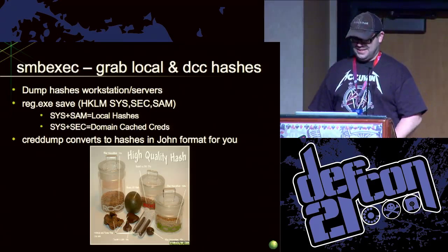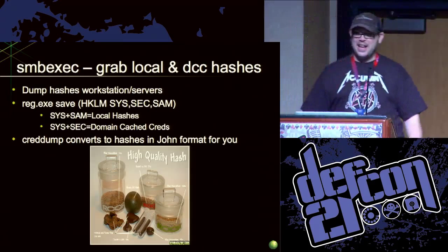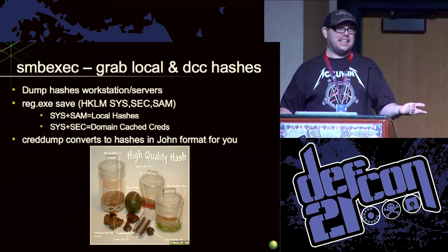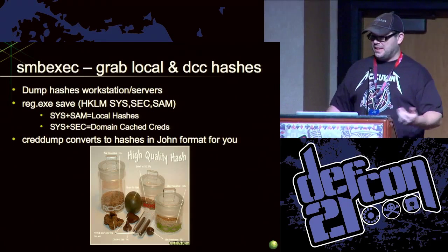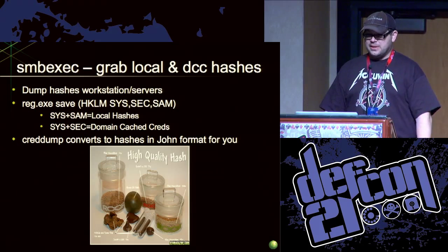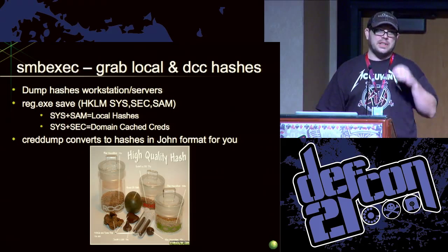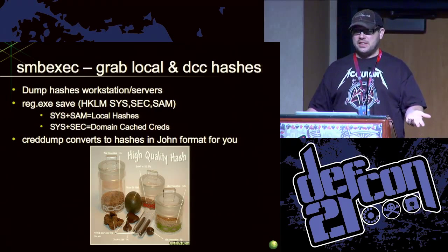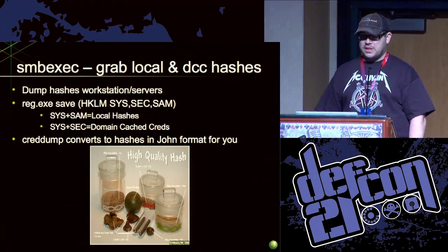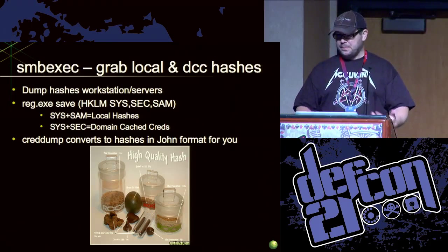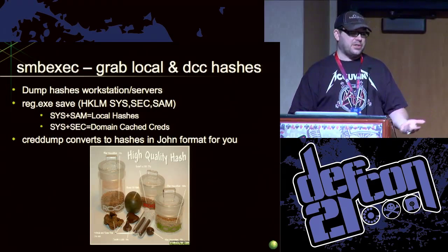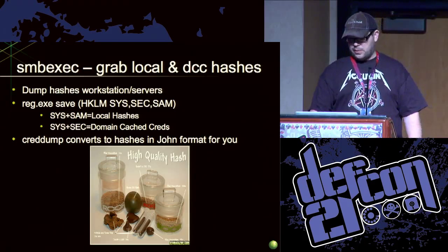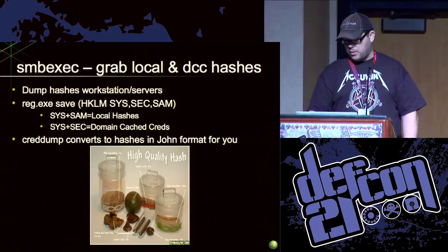We're like, holy fuck, let's get some hashes. The old school way was to get the registry keys out and do it — so let's automate that. We wrote SMB exec to dump the hashes from workstations and servers. What it basically does is run the Windows command reg.exe save. Sys plus SAM is your local hashes — everybody probably knows that. Sys plus SEC is your domain cached credentials. And then we run it through cred dump, which converts the hashes into John format. And of course we get the hash as well.